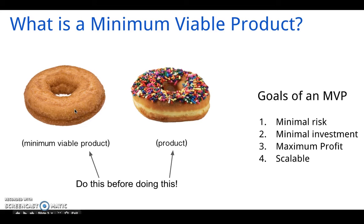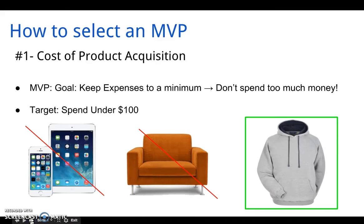Now that we've covered the fundamentals of an MVP, let's get into product evaluation. How do you find products, or how do you know if a product is worth acquiring? There are five factors that I use to evaluate products, starting with cost. Under the MVP model, my goal is to keep expenses at a minimum. I don't want to take on too much risk and I don't want to spend too much money to acquire products. Ideally, I like to keep my product acquisitions under $100. This way, I'm only spending a little bit of money and if it doesn't work out, it's only $100.